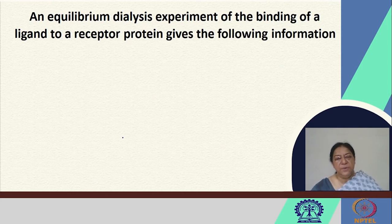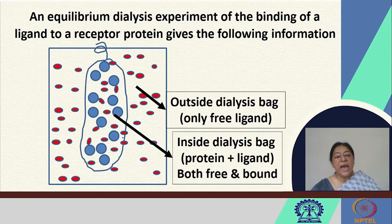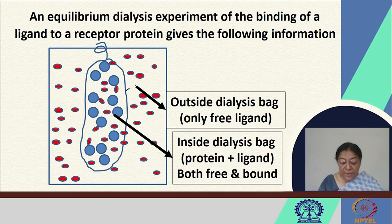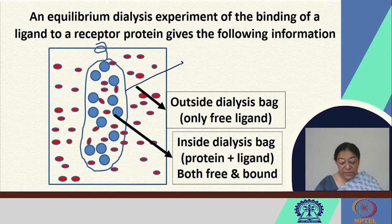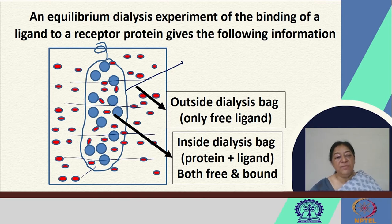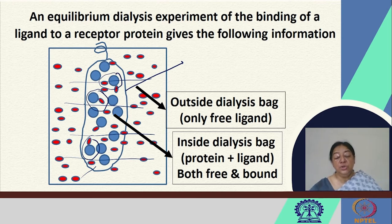In the equilibrium dialysis experiment, we have a dialysis bag with a specific molecular weight cutoff, allowing molecules with molecular weight less than the cutoff to pass freely through the membrane. Outside the dialysis bag, we only have free ligand, and the free ligand concentration outside the bag is equivalent to the free ligand inside the bag. Inside, a protein-ligand complex forms and is retained in the bag because its molecular weight is too high to pass through.